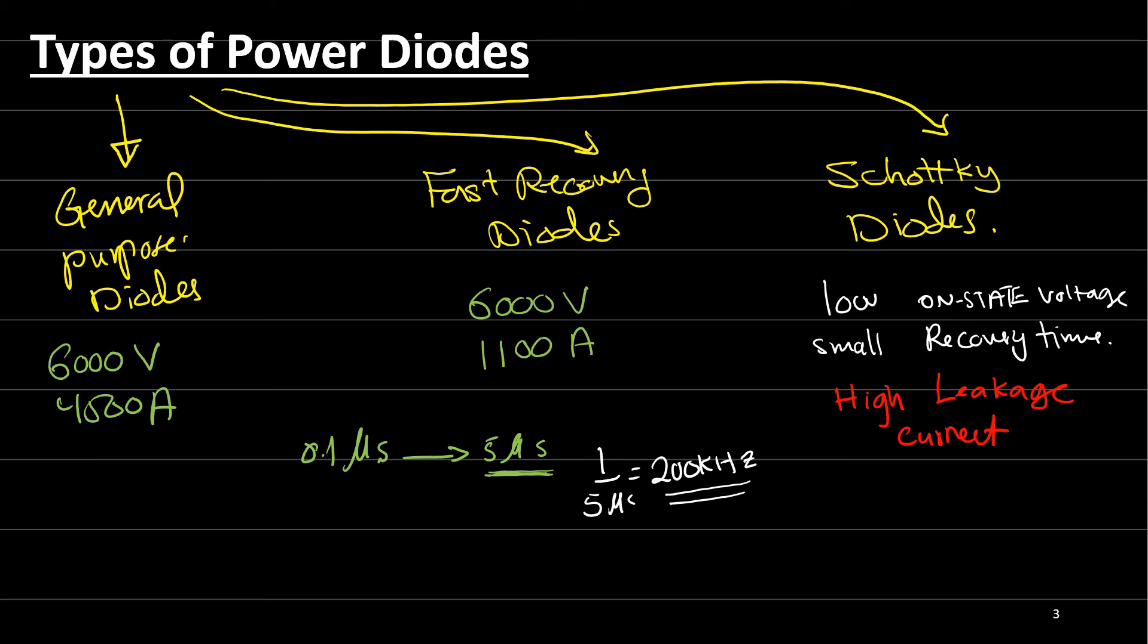So we have a trade-off. If you are looking for high frequency applications, then we need to use fast recovery diodes. If the main purpose of our design is the high voltage high current, the general purpose diode is fine. If we care much about the low on state voltage and the small recovery time and we don't care much about the leakage current, or maybe if the current that we use in the converter is very small, we can use the Schottky diodes at that moment.